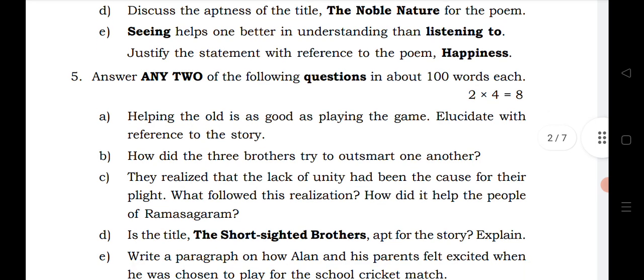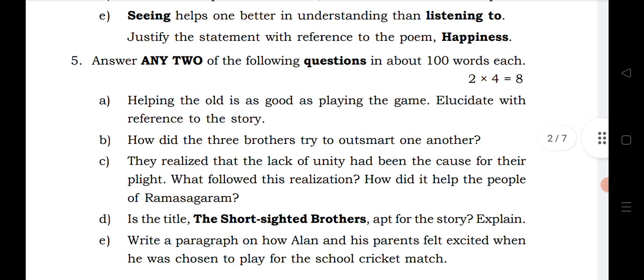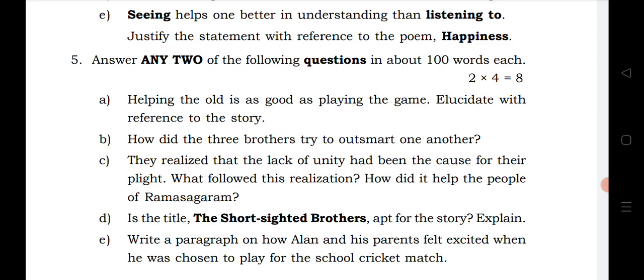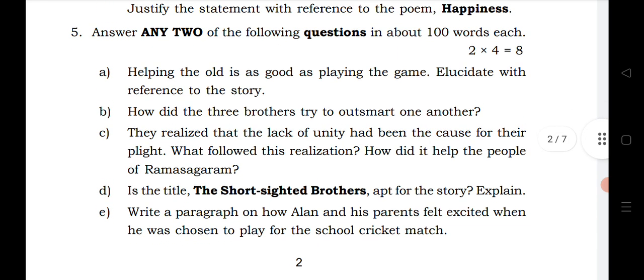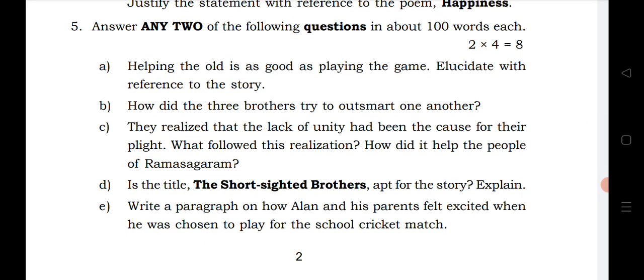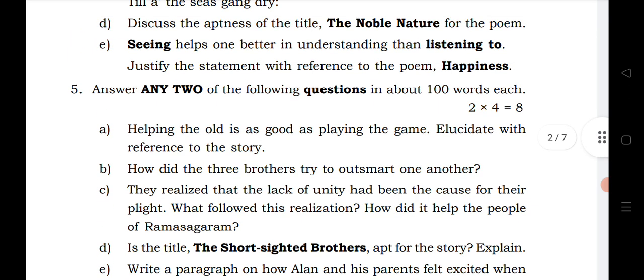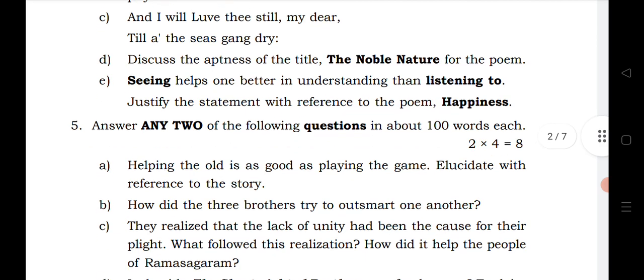For short stories, the two most important chapters are 'Playing the Game' and 'The Short Sighted Brother.' Question A is from 'Playing the Game,' B is from 'The Short Sighted Brother,' C is from 'Sangala Panthalu,' D is again from 'The Short Sighted Brother,' and E is from 'Playing the Game.' If you read 'The Short Sighted Brother' and 'Playing the Game,' that will be very helpful for getting maximum marks.